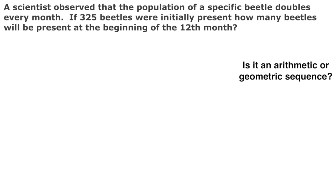The very first thing we need to do is determine whether this one's an arithmetic or a geometric sequence. An arithmetic sequence means that we are adding a common number to it every single time. So if we started with 325 and maybe we're adding 10 every month — 10 new beetles show up — that would be arithmetic. That's not the case with this one. This one's geometric, and the way that we know that is because it's being multiplied by a common factor. In this case it's doubled, so it's being multiplied by 2 every single month.